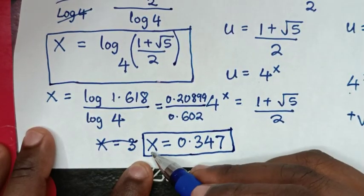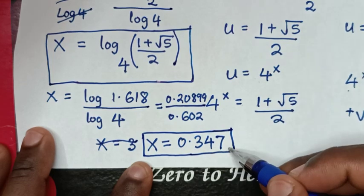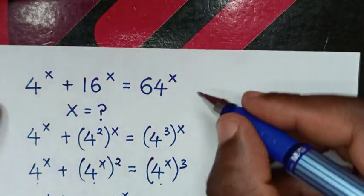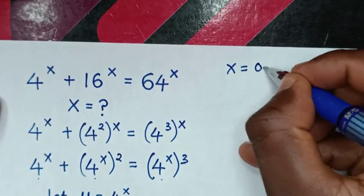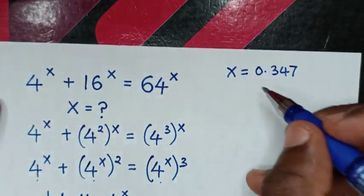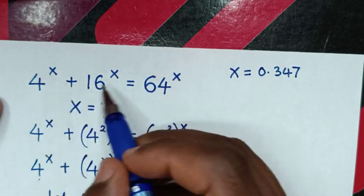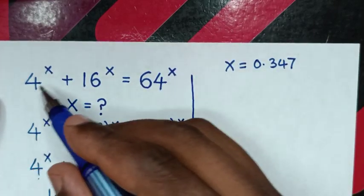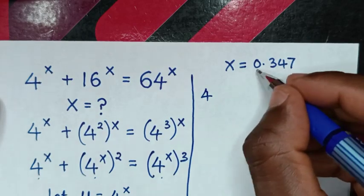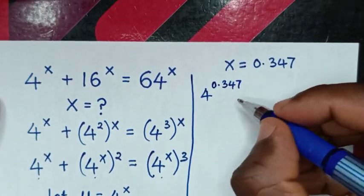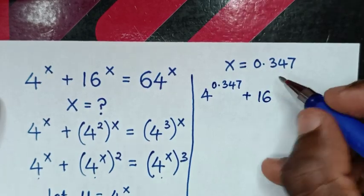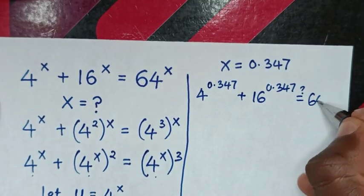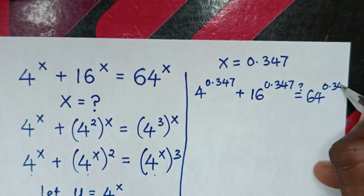From the solution x is equal to 0.347, we substitute this value into the original equation to check if it is correct. It will be 4 power of 0.347 plus 16 power of 0.347 — is it equal to 64 power of 0.347?